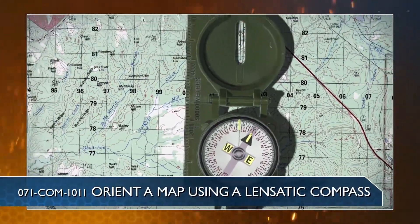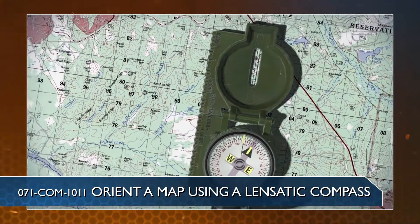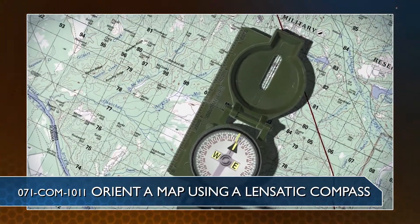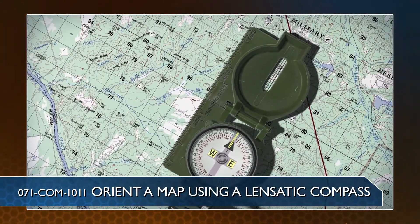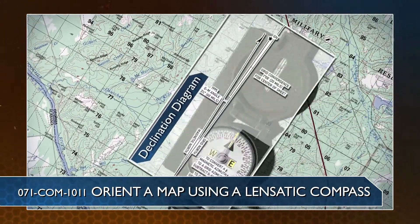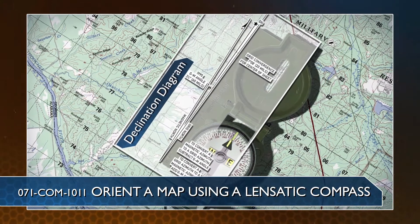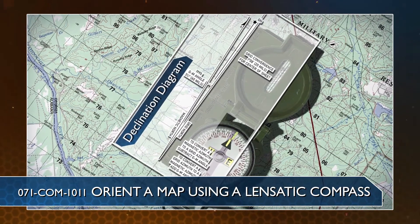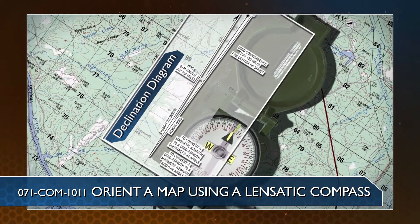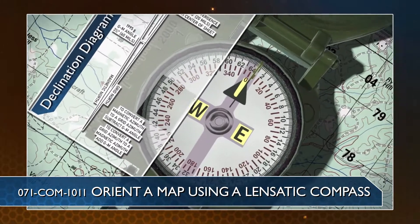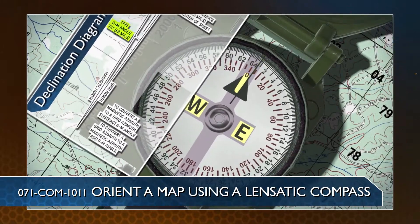To orient your map using a compass, align the magnetic arrow, which always points north, to the declination diagram on the map. For a complete explanation of this procedure, refer to task Orient a Map Using a Lensatic Compass.